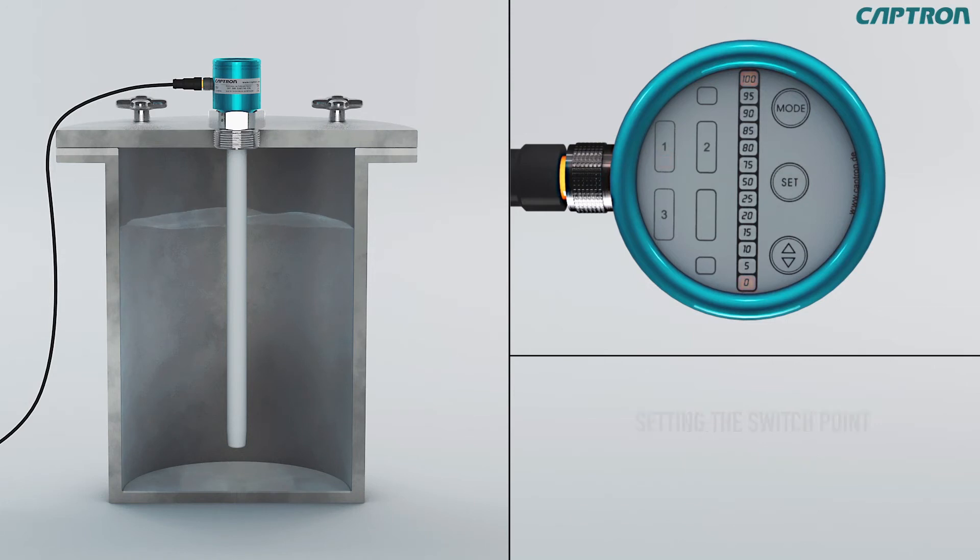The probe then jumps to the next step, setting the switch point PNP1. The now blinking green LED shows the last set value. You can change this with up down.